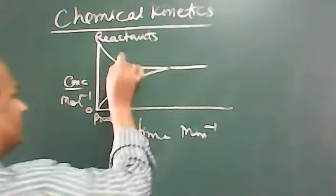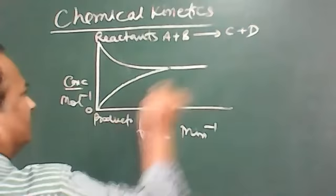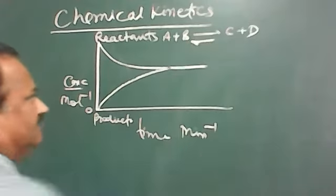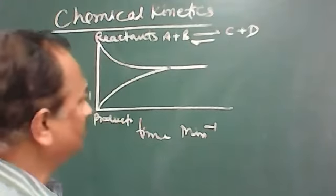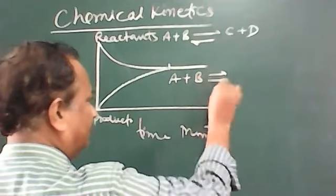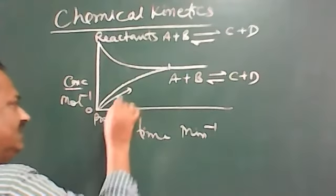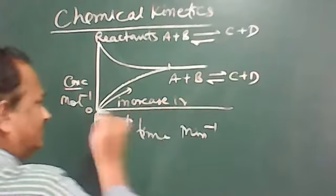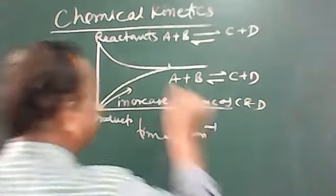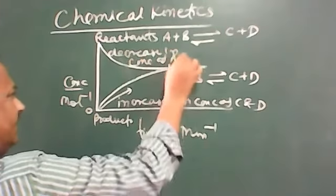At a certain point, if the reactants are A plus B giving C plus D, the two processes are considered — in the case of equilibrium. The curve indicates that from one point to another, there is an increase in concentration of C and D, and a decrease in concentration of A and B.